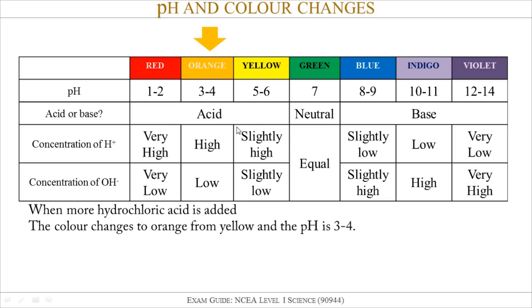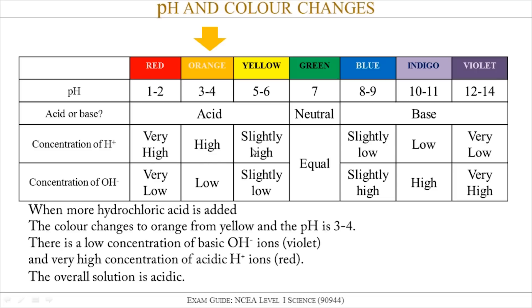As I keep adding more HCl, the color changes from yellow to orange and the pH decreases to 3 to 4. The concentration of H+ ions has increased from slightly high to high, and the concentration of OH- ions has decreased from slightly low to low.